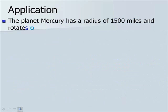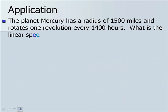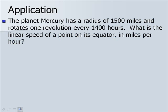Now let's look at an application. The planet Mercury has a radius of 1,500 miles, and rotates one revolution every 1,400 hours. What is the linear speed of a point on its equator in miles per hour? Remember that we were given an equation for linear speed of s over t, which we also found to be r theta over t, since s would be our arc length.